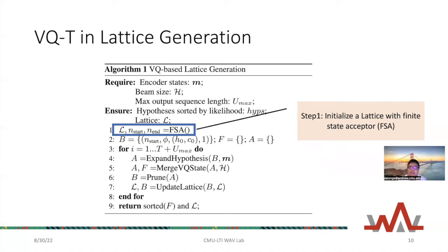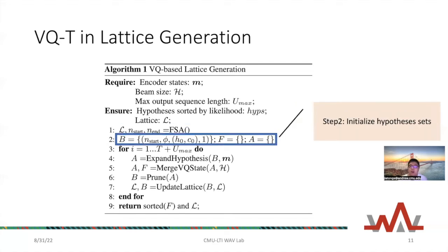Here is the lattice generation algorithm. The inputs are the encoder states, beam search size H, and maximum output sequence length U_max. At step one, we initialize a lattice with a finite state acceptor (FSA). We then initialize the hypothesis set stored in set B, along with empty sets F and A for future use.